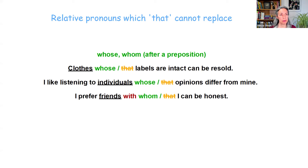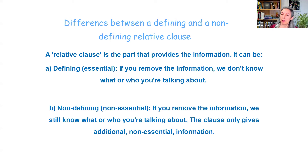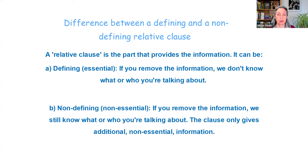So that answers the question, but there is one more important point: the difference between a defining and a non-defining relative clause. A relative clause is the part that provides the information about the noun — and this part can be defining or essential, or non-defining or non-essential. With a defining relative clause, if you remove the information, we don't know what or who you're talking about anymore, so it has to stay in the sentence. With a non-defining clause, if you remove the information, we still know who or what you're talking about — it only gives additional, non-essential information.